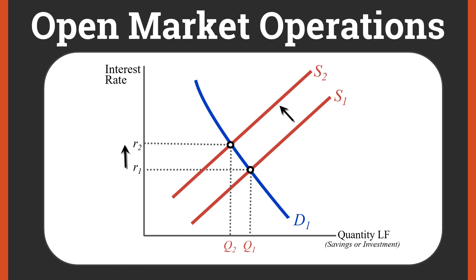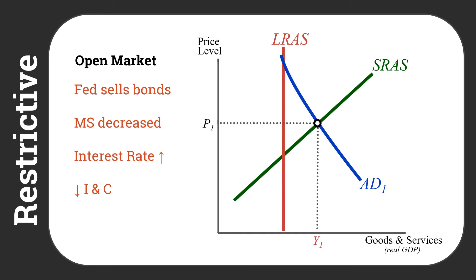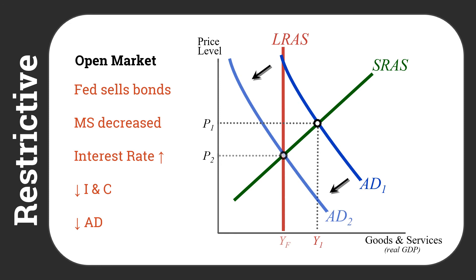When we have higher real interest rates, we end up spending less on large-scale consumption and investment. So the story with open market operations and contractionary monetary policy is: the Fed sells bonds, that decreases the money supply, which causes the interest rate to go up, and when our interest rate goes up, we drop investment and consumption. So what happens to our aggregate supply, aggregate demand picture? The aggregate demand curve shifts back down. This is our restrictive monetary policy with open market operations.